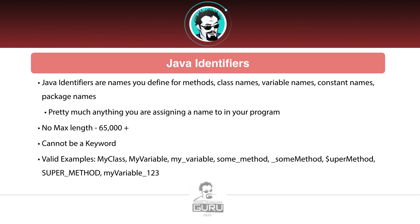One rule for an identifier is that it cannot be a keyword. Under valid examples, these are all valid examples of identifiers within Java. They can be class names, variable names, constant names, or package names — all valid things to Java.